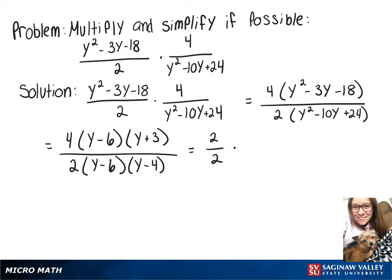So we'll have 2 over 2 times y minus 6 over y minus 6 times what we have left is 2 times y plus 3 over y minus 4.